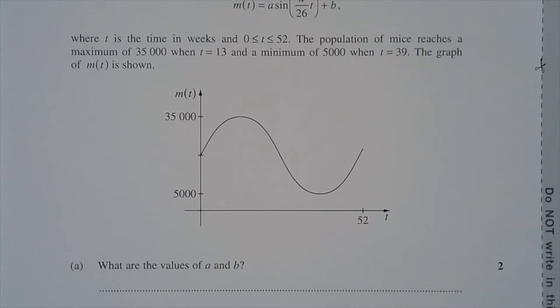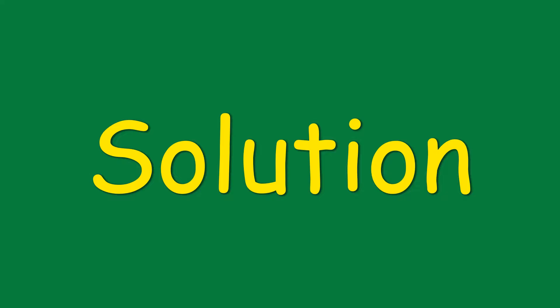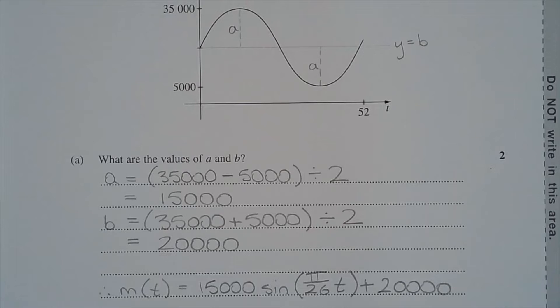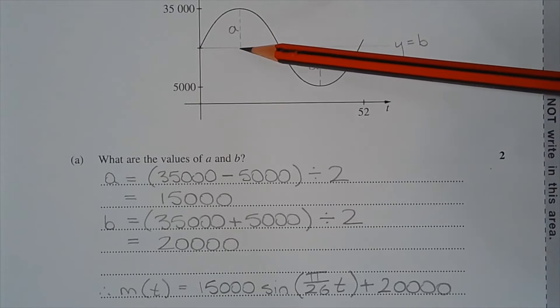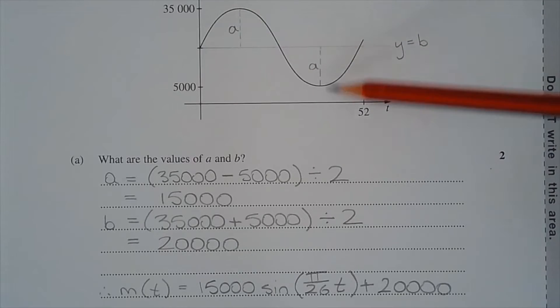Part a, what are the values of a and b? a represents the amplitude of the sine wave, which is the distance from the line of center to either the peak or the trough.